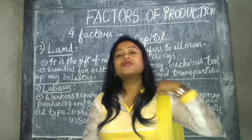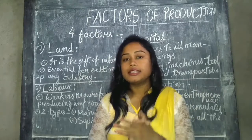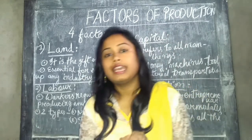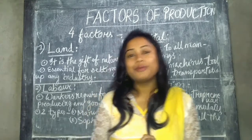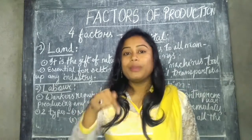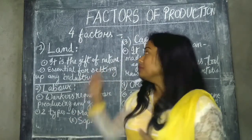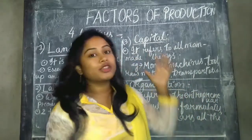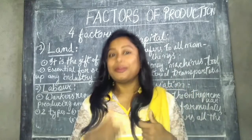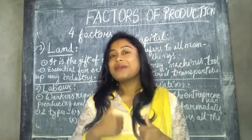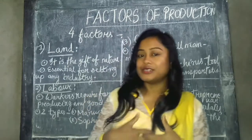So all four — land, labor, capital, and organization — are the factors of production necessary for producing any good or commodity. If you like my video, please leave a like, comment below about the class, and subscribe to my channel Education for You. Please share it with your friends so they can also learn about factors of production.